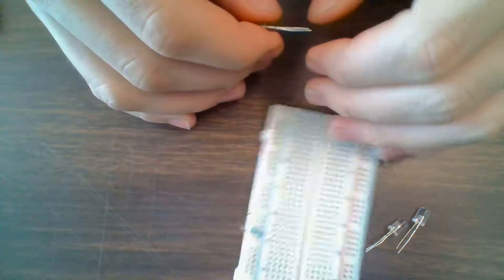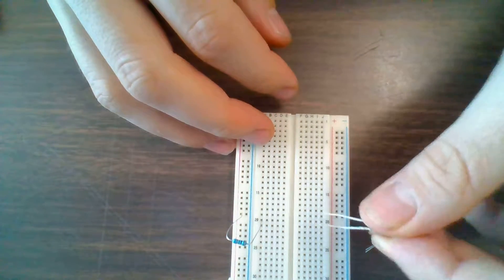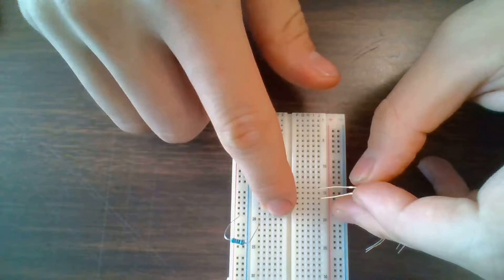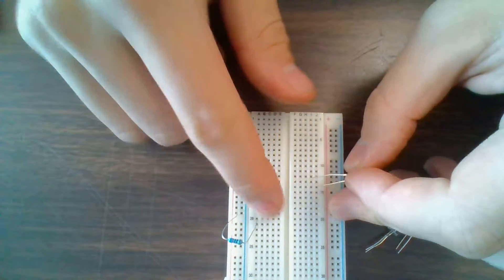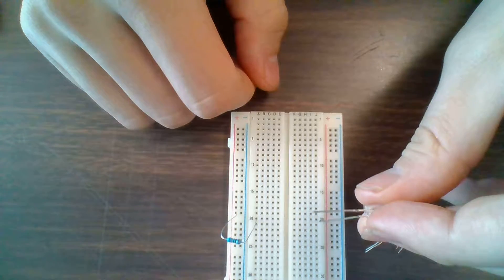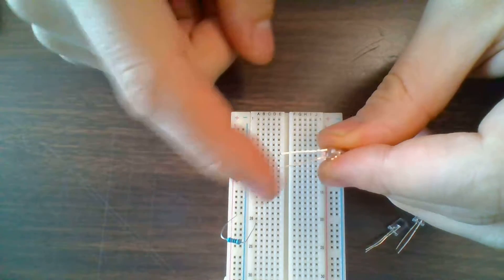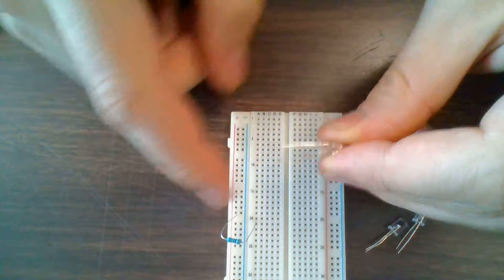Now if I want to connect another component in series, that means after it in a row. What I want to do is make sure that that component is plugged into the same row on the breadboard as my resistor. So in this case I'm using an LED.